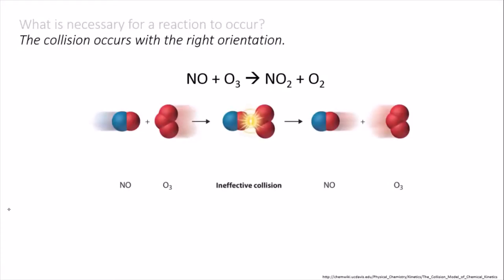In this first example, the oxygen of the NO bumps into the ozone, but these two oxygens can't make a bond, so the molecules bounce off each other and continue on unchanged.